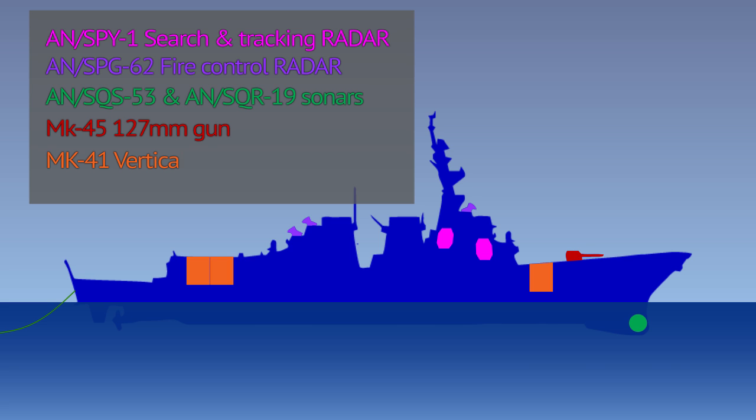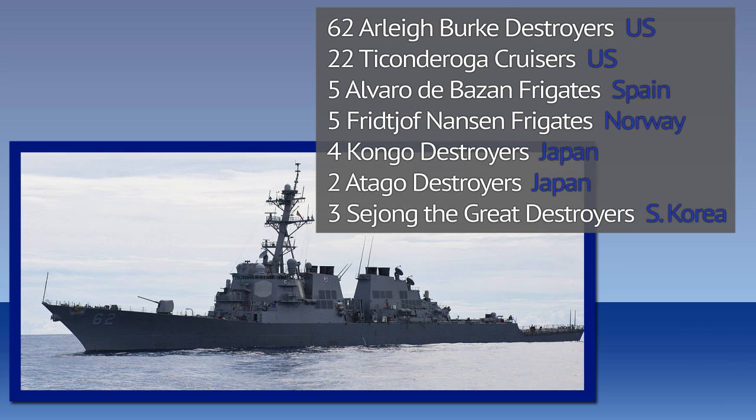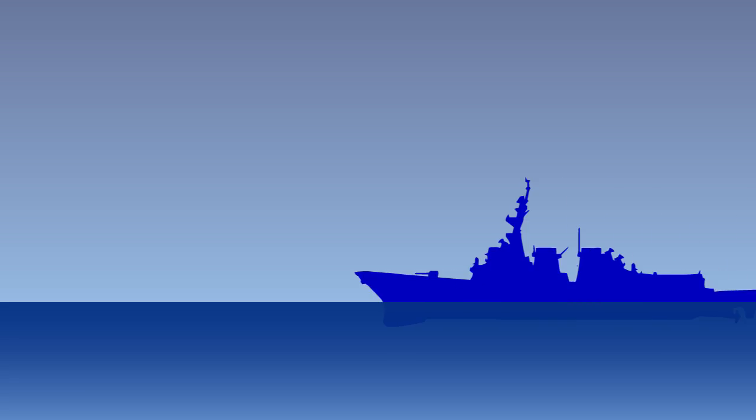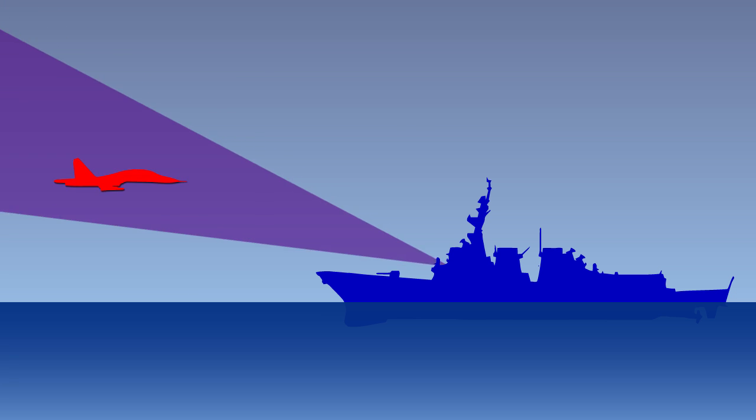By far the most numerous ship class with Aegis is US Navy's Burke Destroyer. The system can detect and deal with underwater or surface threats, but the most famous aspect of Aegis are its anti-air capabilities. If enemy is not emitting with own radars, Aegis' SPY-1 radar would try to discover the enemy on its own.